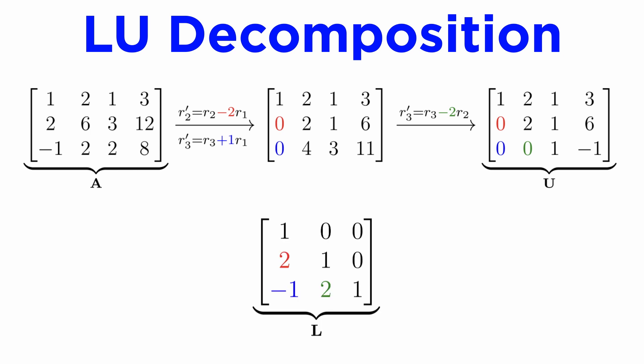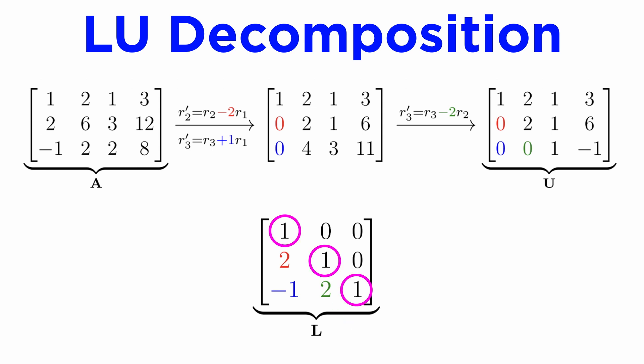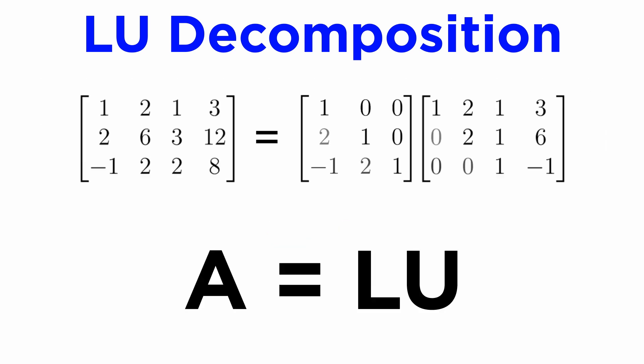To find L, we just write the negative version of whatever coefficient we used in the row operations to produce each zero below the diagonal. The diagonal entries of L will always be ones, and the entries above the diagonal will always be zero, and so we can easily write down our LU decomposition.